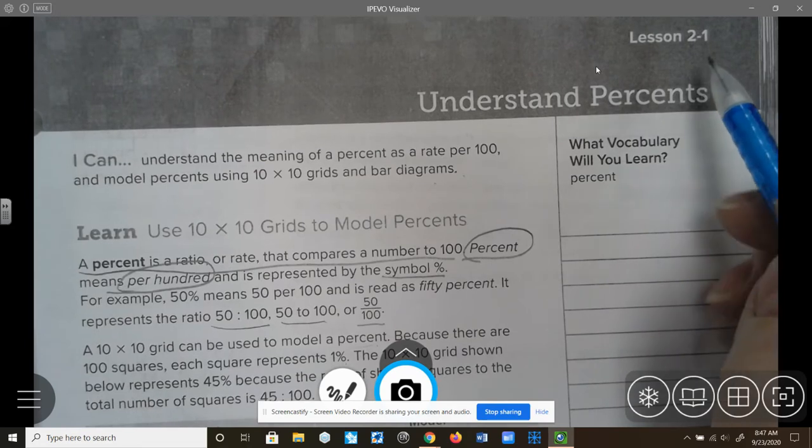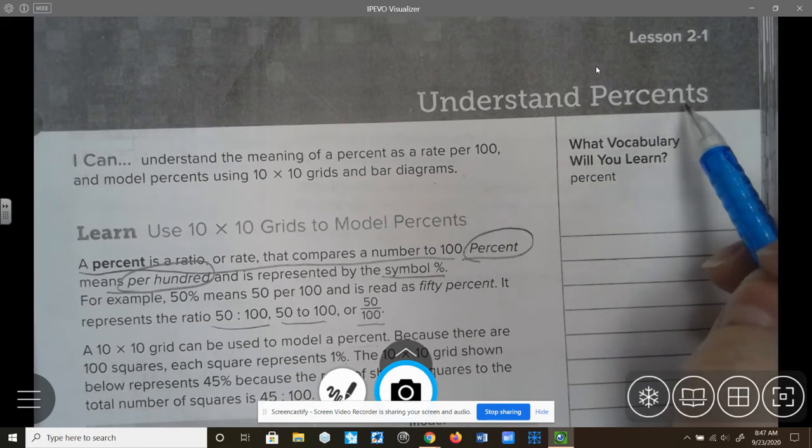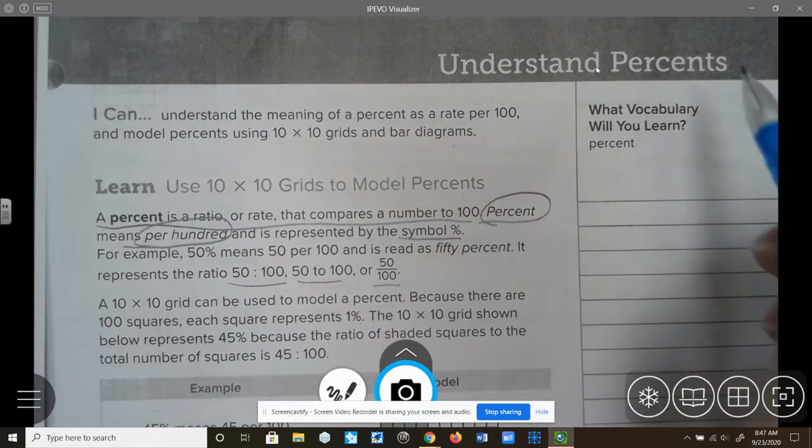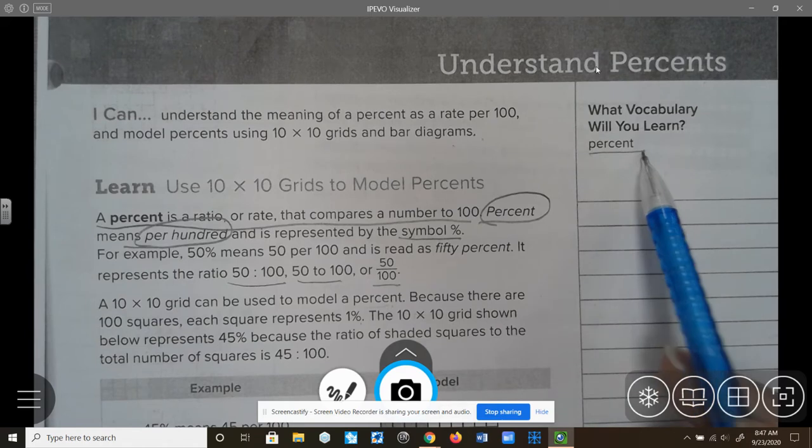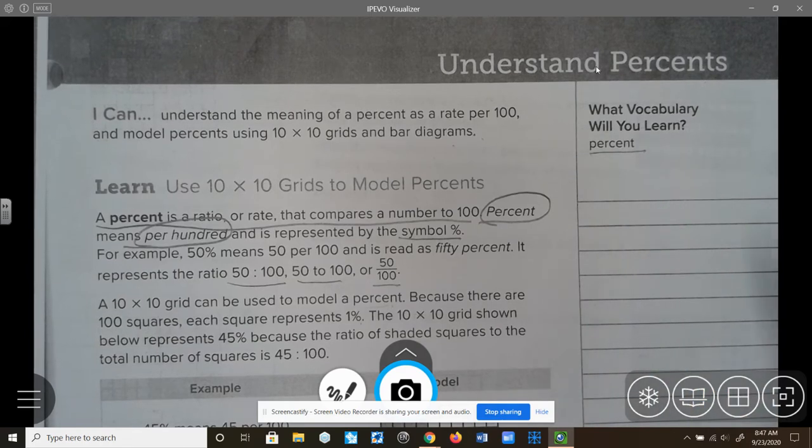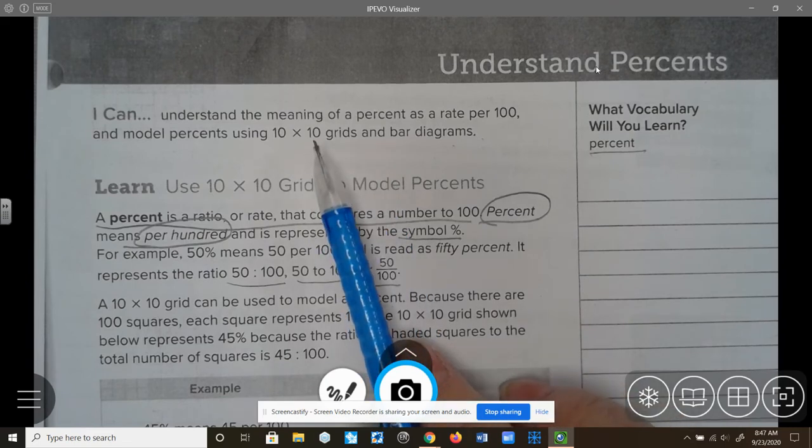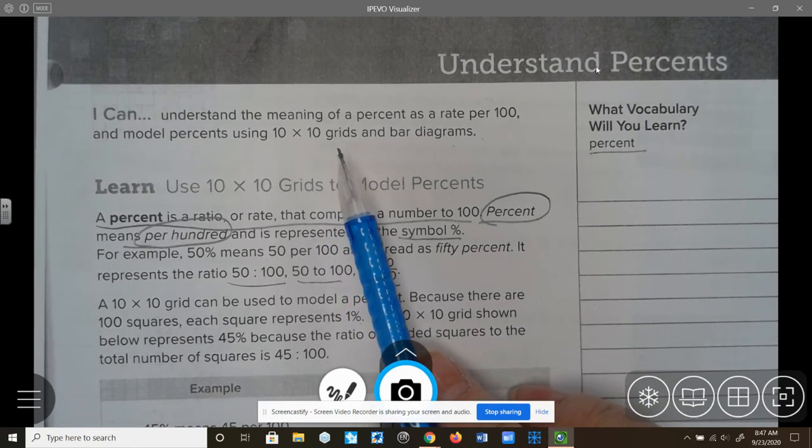Today we are going to talk about Module 2, Lesson 1, Understanding Percent. On page 79 in your book is where you will find this page. We are going to focus on looking at the vocabulary word percent. I can understand the meaning of a percent as a rate per 100 and model percents as a 10 by 10 grid and bar diagram.